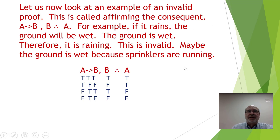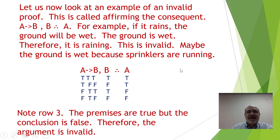Looking at the truth table, note row three: the premises are true but the conclusion is false. Therefore the argument is invalid. You cannot affirm the consequent as a valid proof.